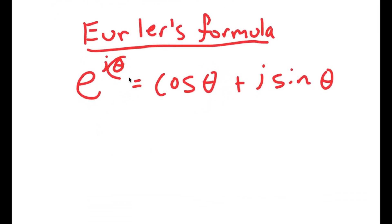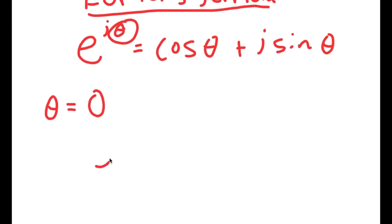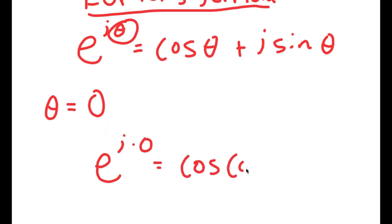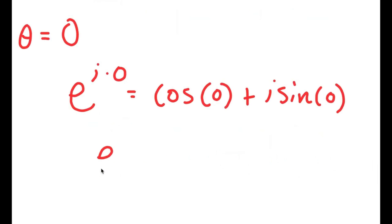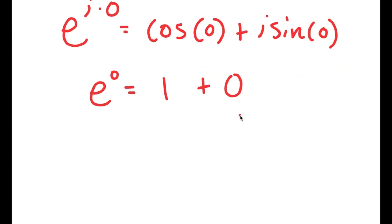So let's say that theta is equal to 0. If theta equals 0, then I get e to the power of i times 0 is equal to cos(0) plus i times sin(0). So I get e to the power of 0 is equal to 1. Cos(0) is 1, sin(0) is 0, and 0 times i is 0. So 1 plus 0, and e to the power of 0 is 1. So I get 1 is equal to 1 plus 0.